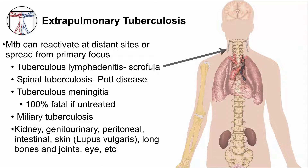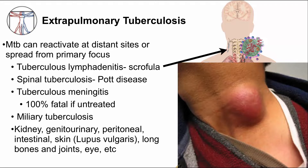Lymphadenitis is the most common extra-pulmonary disease manifestation. TB lymphadenitis is termed scrofula. Historically this was caused predominantly by M. bovis from drinking unpasteurized cow milk. The anterior cervical chain is commonly affected. As opposed to lymphadenitis from other more common bacteria, TB lymphadenitis tends to be painless, slow-growing, and can have a purplish hue to the overlying skin, as you can see in this image.